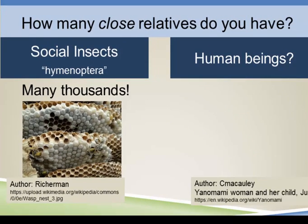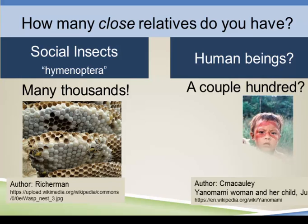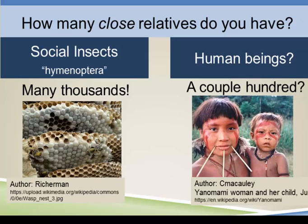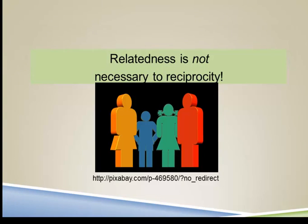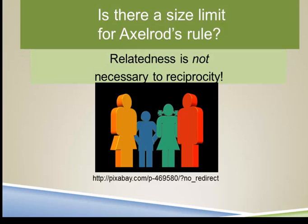But when we look at human beings, it would appear that the number is going to be smaller. An anthropologist named Napoleon Chagnon suggested that if a society is glued together by kinship, the upper limit is going to be a couple hundred people who will be able to live together in a village. And as a village gets larger than a couple hundred and relatedness declines, that village will shatter and split into new villages. But of course, relatedness is not necessary to reciprocity, and this might lead us to ask, is there a size limit to Axelrod's rule? Is there a size limit to reciprocity?